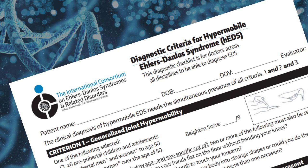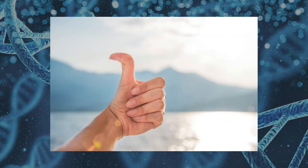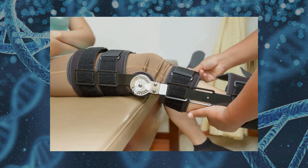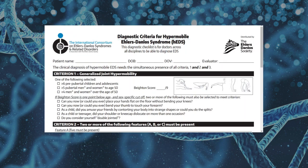It tests your hypermobility with the Beighton score. Outside of this testing, these moves are not something you should be doing just because you can. If your knees hyperextend, try to be aware of how you stand and correct it — some braces can help with this. Skin, abdominal hernias, mitral valve prolapse, pain, and family history are some of the other criteria that are taken into account.